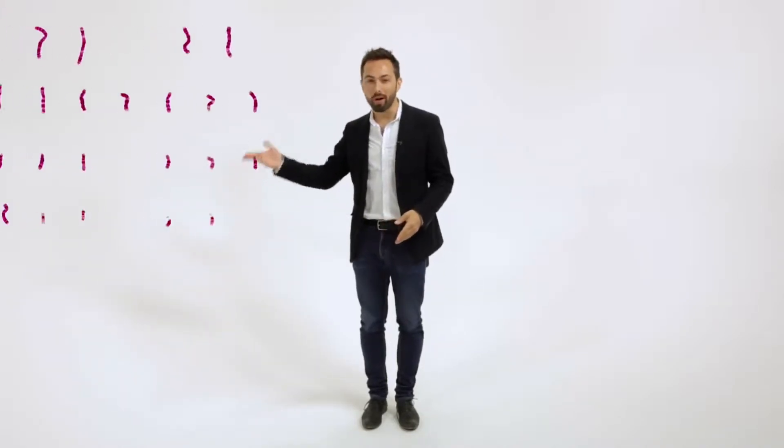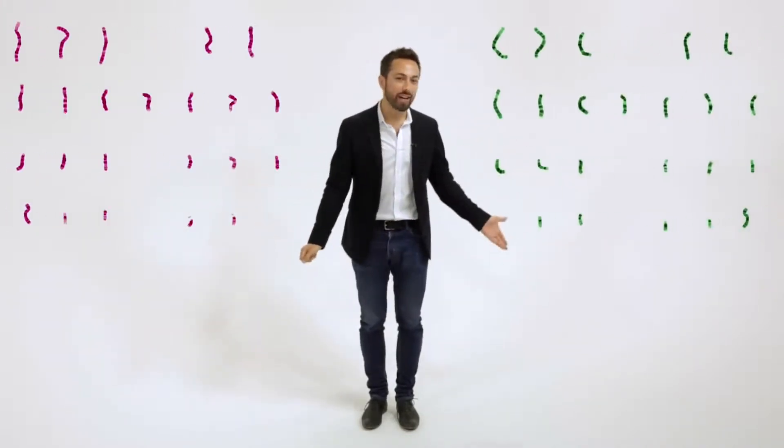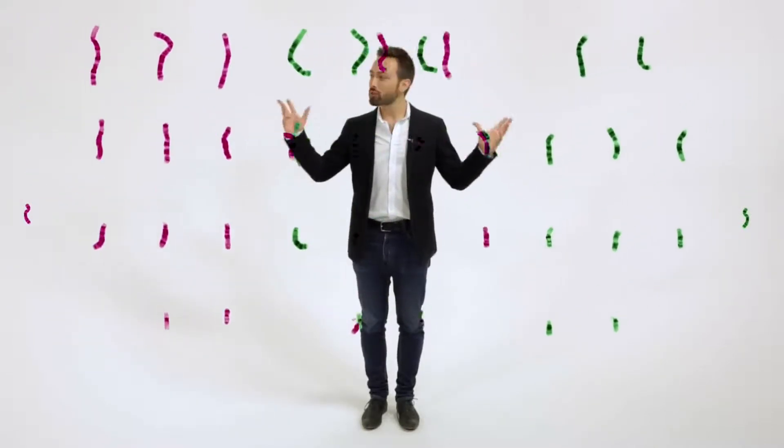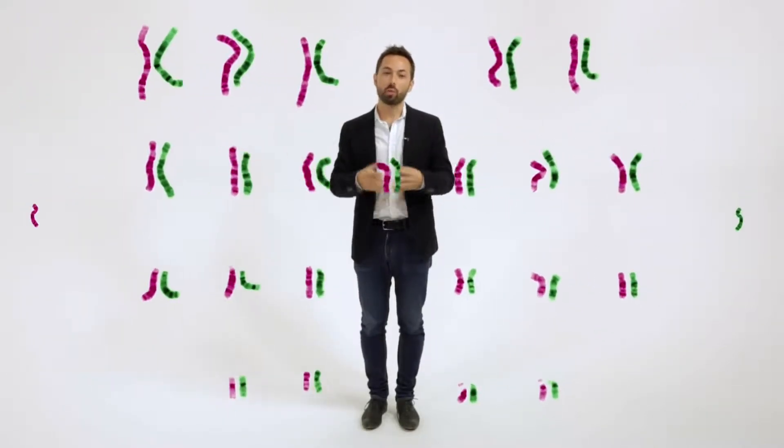Your unique set of DNA first formed when 23 chromosomes from your mom mixed with 23 from your dad. Now 22 of those chromosomes from each parent form matching pairs, but the 23rd set is the sex chromosomes.